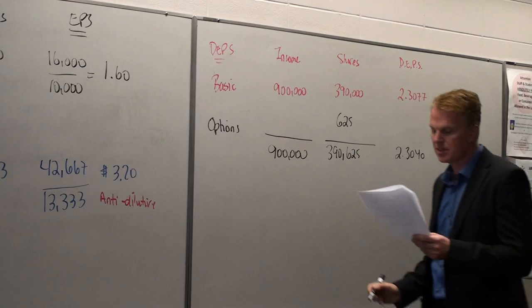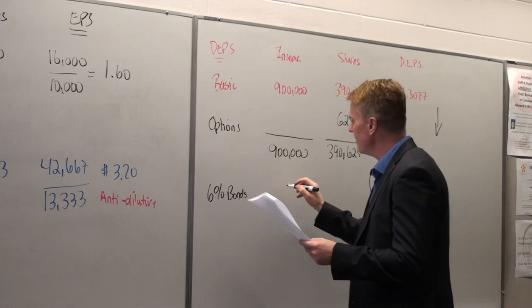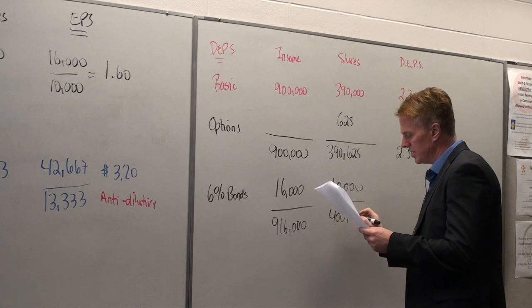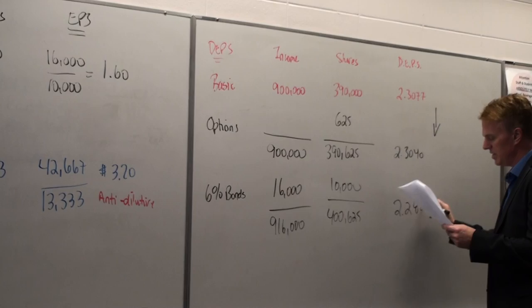So I put that information in. Again, you can now start to see how this is going lower. Next, I'll put in my 6% bonds. I'll put that information in. 16,000. 10,000. Do my totals. 916. 400,625. Again, you can see how this is going lower.